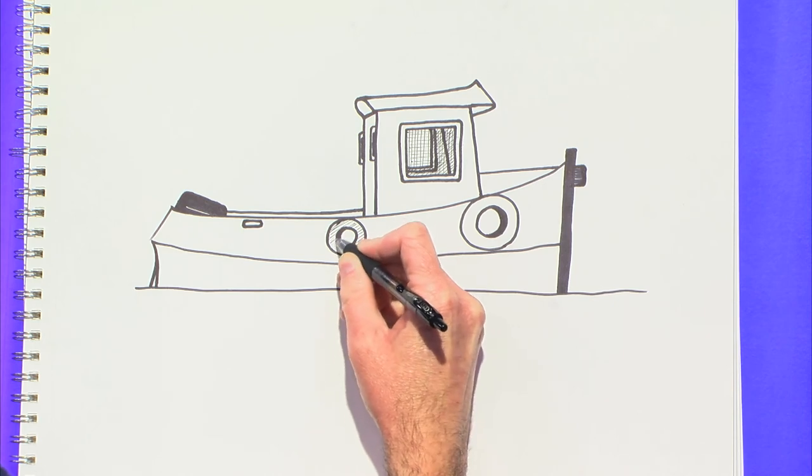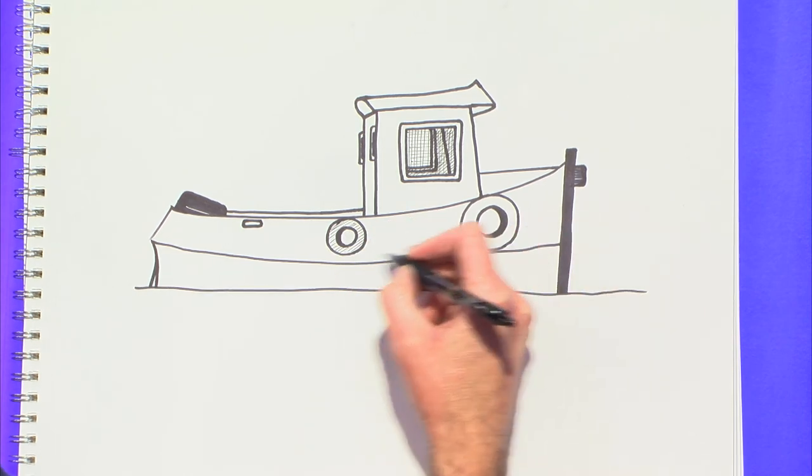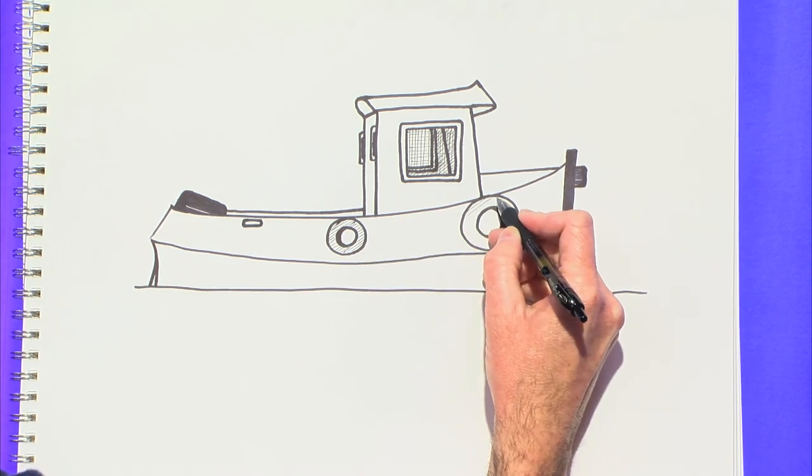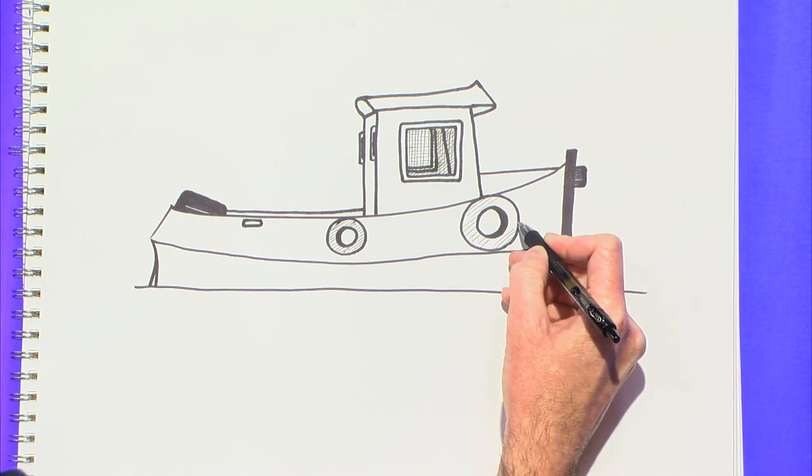If I colored it in with the same marker that I had drawn it with, you'd lose these shadows in the back there that make it more three-dimensional. So I just wanted to do it with pen instead, so it separates it a little bit.